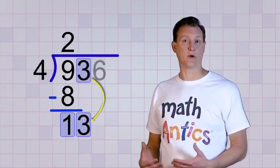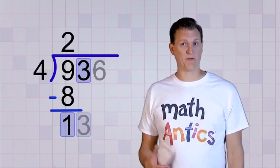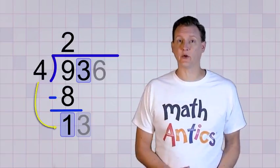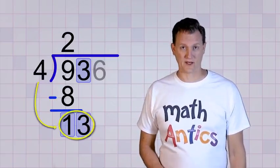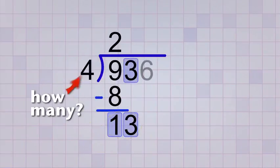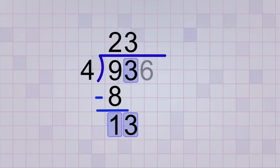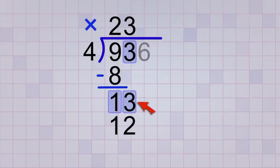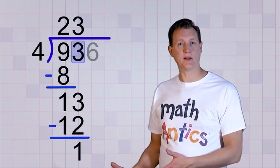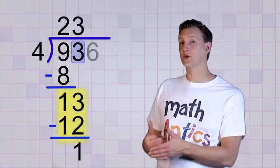Okay, so bringing down that next digit makes our remainder bigger. And that's good because before, the remainder was so small that 4 couldn't divide into it. But now it's 13 and 4 will divide into 13. So we ask, how many 4's will it take to make 13? Well, 3 4's would be 12 and that's really close without being too big. So let's put 3 in our answer line. Yep, it goes right over the 3 because that's the next digit we were dividing in this digit by digit process. And then 3 times 4 is 12, which we put right below the 13 so that we can subtract to get the next remainder, which will also be 1. See how we're just repeating the basic division procedure? But we're going further down the screen as we do.